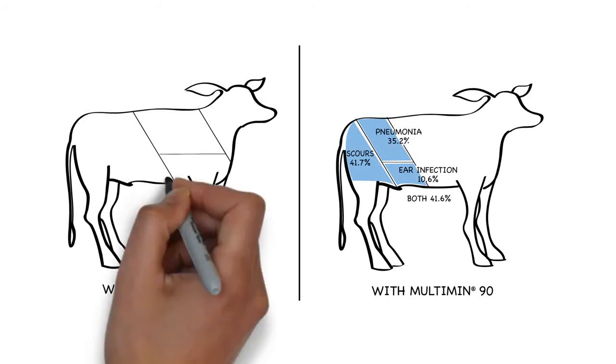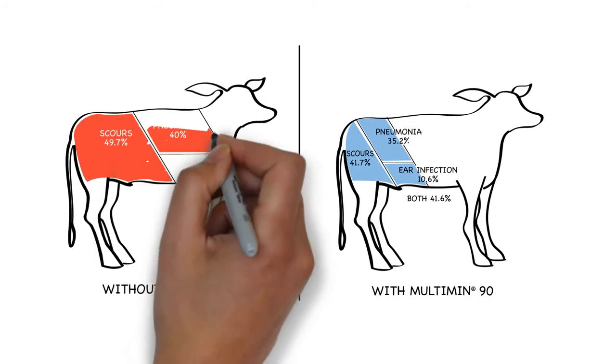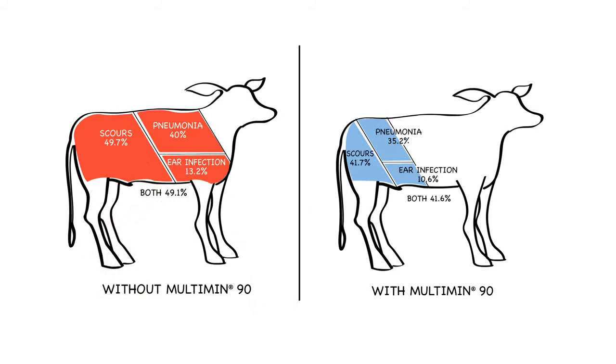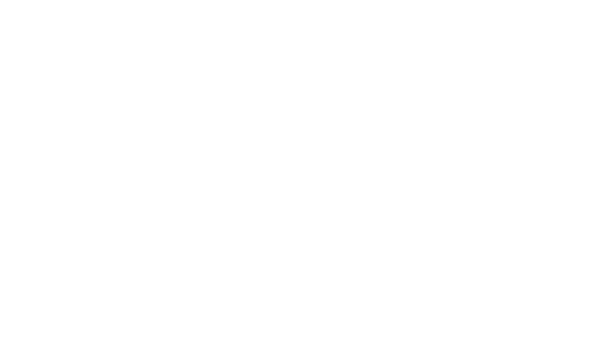Ultimately, Multi-min 90 treated calves had lower incidence of calf scours and also had lower combined incidence of pneumonia, ear infections with head tilt, and dropped ear compared to the control group.